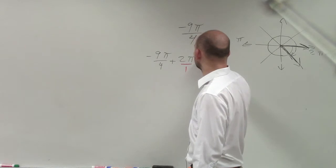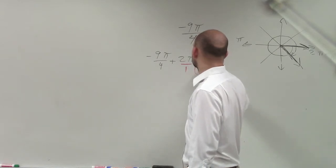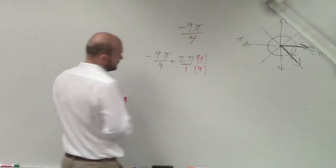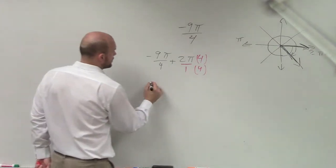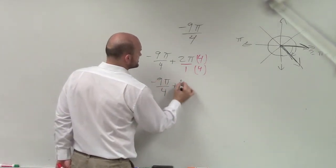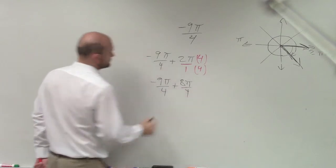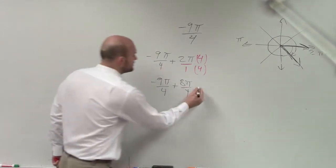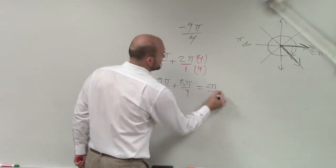So to do that, I need to get my common denominators. So I multiply 2 pi by 4 over 4, and I get negative 9 pi over 4 plus 8 pi over 4. I add them up.